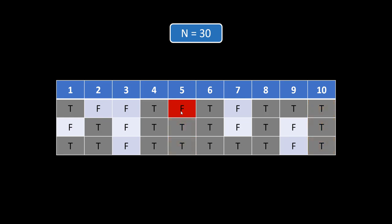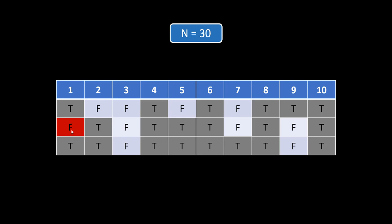We then move to the next prime number with a false value, which is 7, and mark all its multiples as true. We can see that all multiples of 7 in the range were already marked true, so there was no change in the array. Moving to 11, that is also a prime number — we mark its multiples as true, and 22 was already true. For 13, its multiple 26 was also already true.